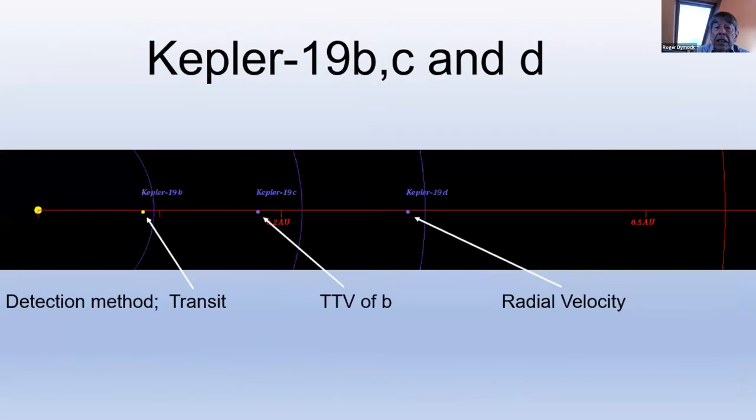Another example of TTVs leading towards discovery. The very first detection of a non-transiting planet using transit timing variations was carried out with NASA's Kepler Space Telescope. The transiting planet Kepler-19b showed transit timing variations with an amplitude of five minutes and a period of about 300 days, indicating the presence of a second planet, Kepler-19c, which has a period that is in near 3 to 1 resonance with Kepler-19b. D was discovered by the radial velocity method, that's measuring the wobble of the host star due to gravitational interaction between the star and the planet.